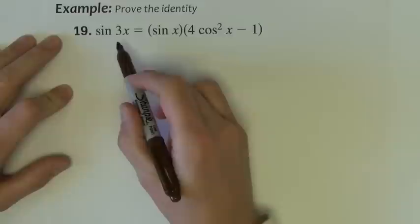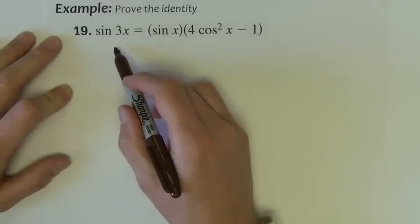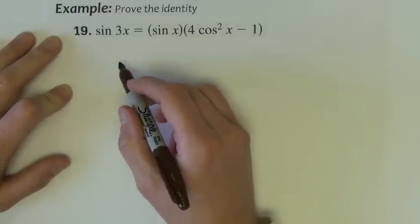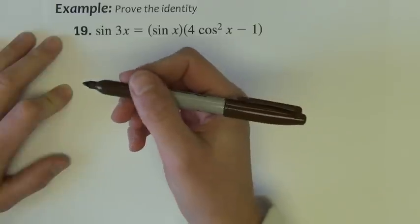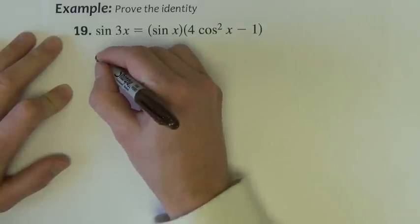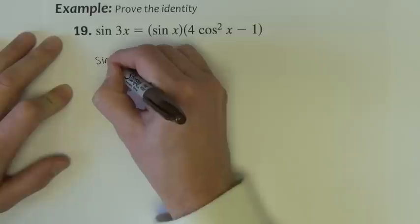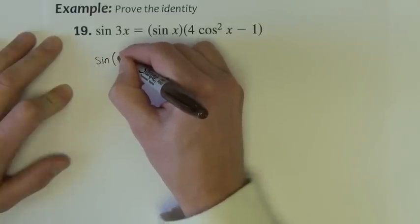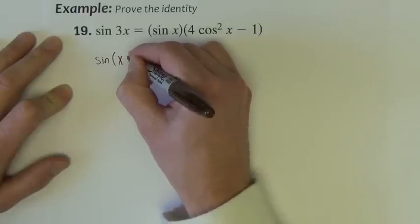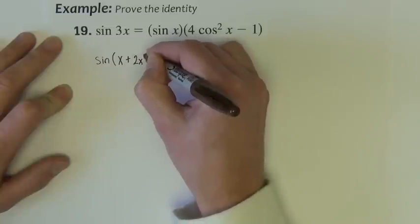Next example, we have sine 3x, and the problem with that is we don't have a sine 3x formula, we have a sine 2x formula. Well, we also have sum and difference formulas from the last section, so I'm going to begin by writing sine 3x as sine maybe x plus 2x.